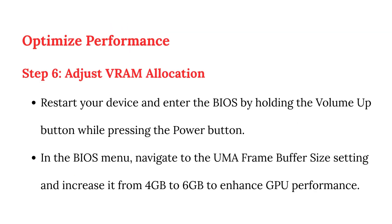Step 6 — Optimize Performance: Adjust VRAM Allocation. Restart your device and enter the BIOS by holding the Volume Up button while pressing the Power button.